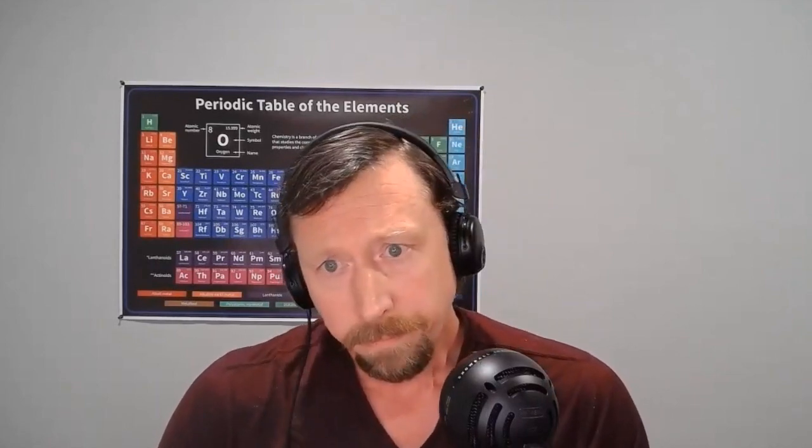The down quark has a little bit greater mass than the up quark. What that means is that when a neutron changes into a proton and that down quark switches to up, that particle loses a small amount of mass. That mass goes into the formation of an electron and a lot of energy — and the electron, of course, is what we're most concerned with during beta radiation.